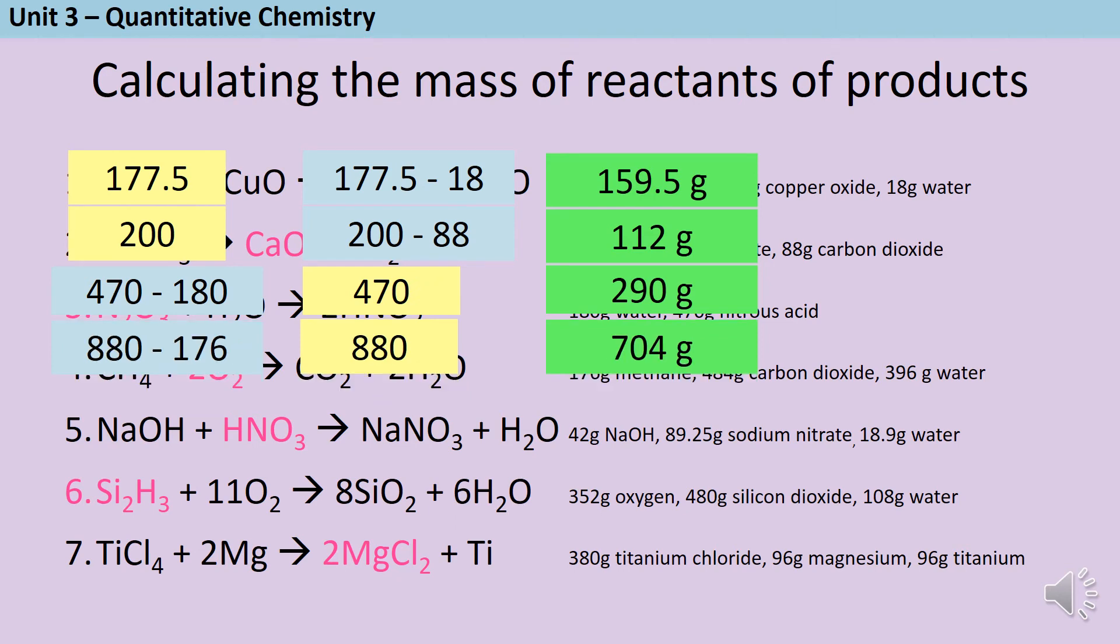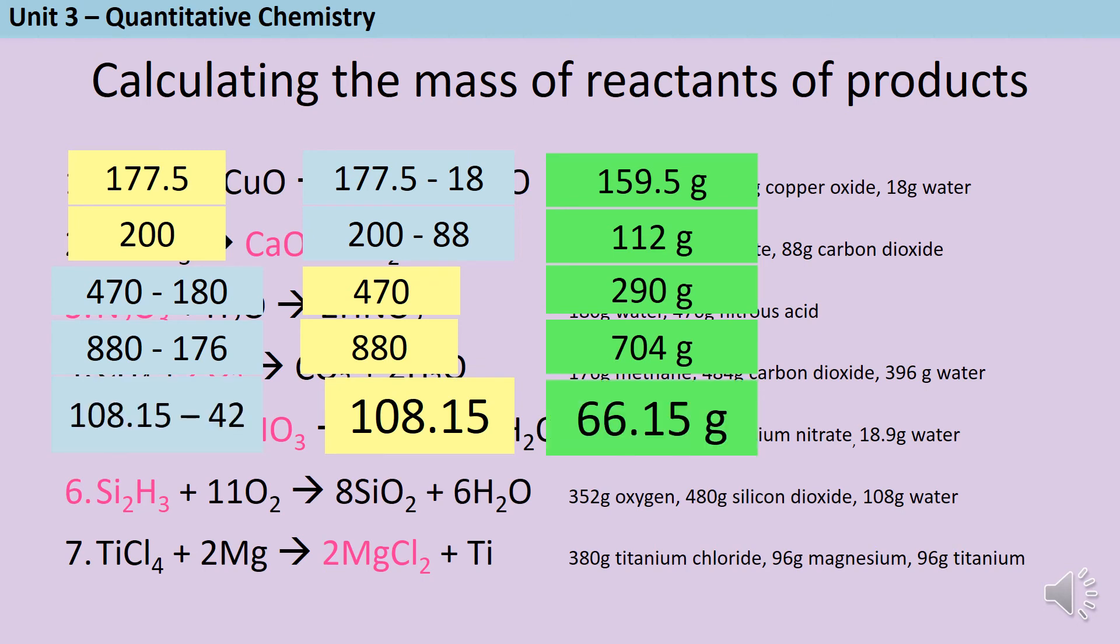For question number five, on the right hand side there are 89.25 grams of sodium nitrate and 18.9 grams of water. So that's a total of 108.15 grams. And then we subtract the 42 grams of sodium hydroxide to give a total of 66.15 grams.